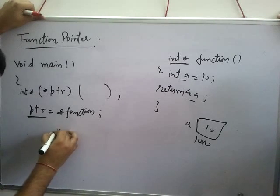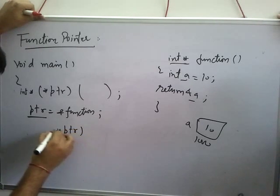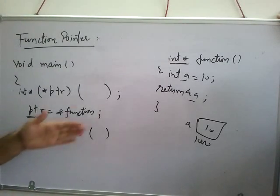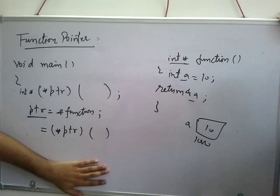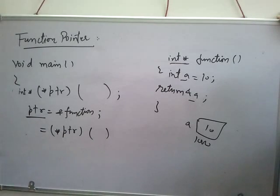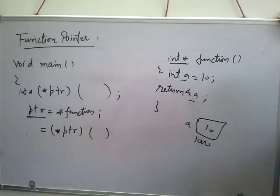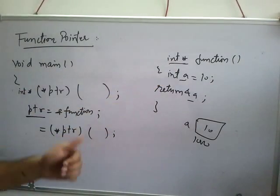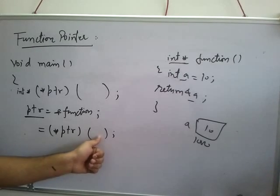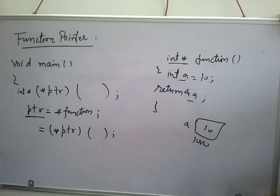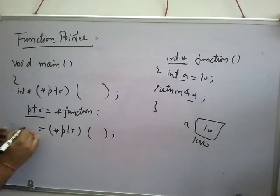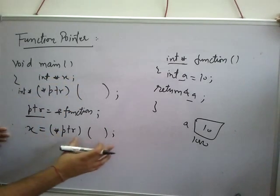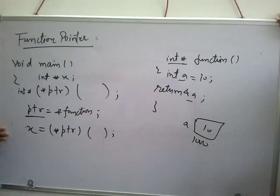This is the way to call a function by using a pointer. But I will tell you, this is the syntax. This is the ptr function to call, which has no argument. This return type is an address. I am creating a pointer here. This address needs to be stored.